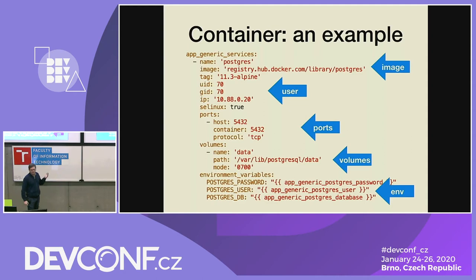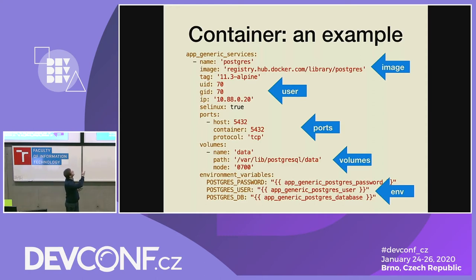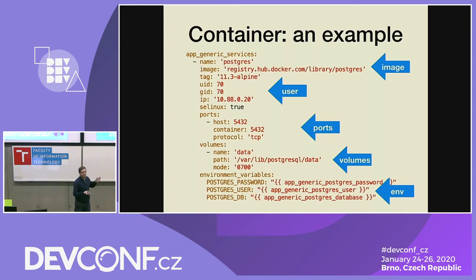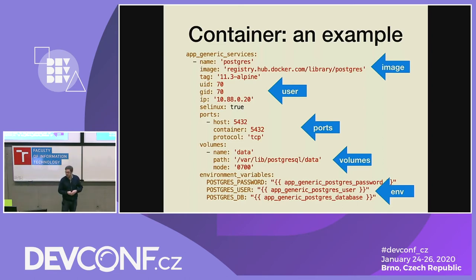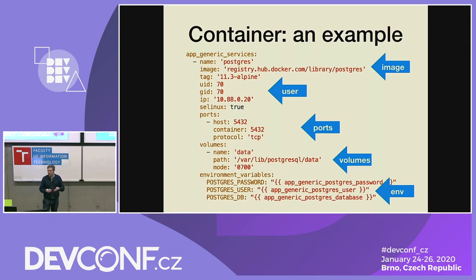What does this deployment descriptor look like? For this generic application playbook, the role used is the 'set container' role. It is a configuration file in YAML, and I have to admit I'm not that familiar with Kubernetes, but I think there are certain similarities with regards to how to provide environment variables or storage. This is what we can configure on a per-container basis, and the dash at the name gives it away — it's a list of containers. This list will be configured on the host, each will get their systemd configuration, and it will be ensured that the service is running.